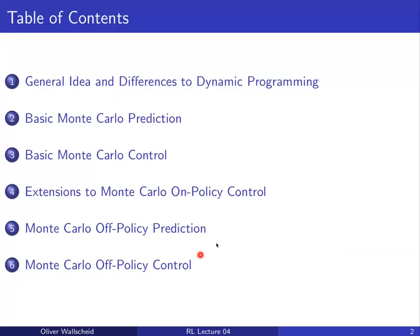We will use the following agenda. First, we will discuss briefly the main differences between Monte Carlo methods and dynamic programming from last week. Then we apply Monte Carlo to prediction and control, extend it in the so-called on-policy fashion — using one policy for exploration and exploitation. Then we will split it up in the so-called off-policy domain, where we have two separate policies: one designed for exploration and the second designed for exploitation.